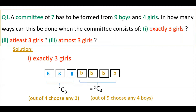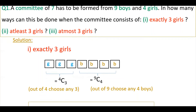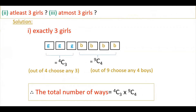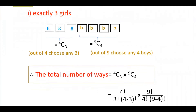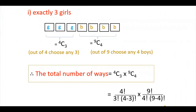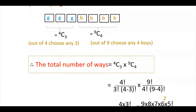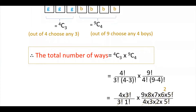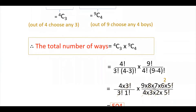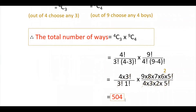And out of 9 boys, you have to select only 4 boys — that is 9C4. So if you multiply 4C3 into 9C4, you will get the total number of ways to select the committee members. If you calculate this, you will get 504 in the first case.